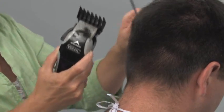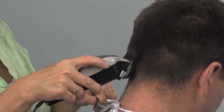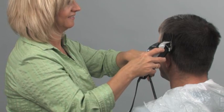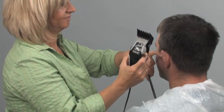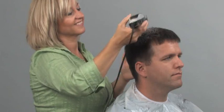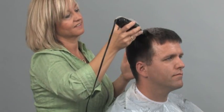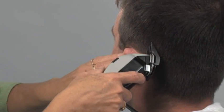Keep the teeth of the guide comb on the scalp and continue through the entire back section. Then you can cut the top of the head with the appropriate guide comb, starting at the front hairline or bangs.